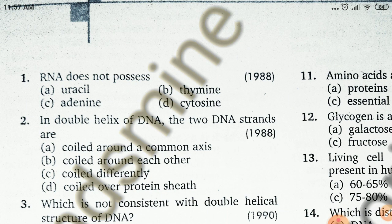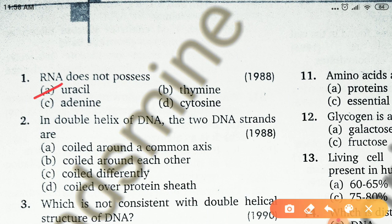The options are uracil, adenine, thymine, and cytosine. We need to know that uracil is present in RNA, but thymine is not. In DNA, uracil is absent. So for RNA, the right answer is thymine — RNA does not possess thymine.